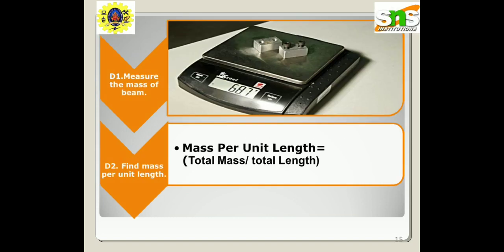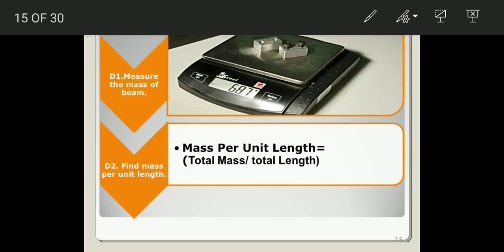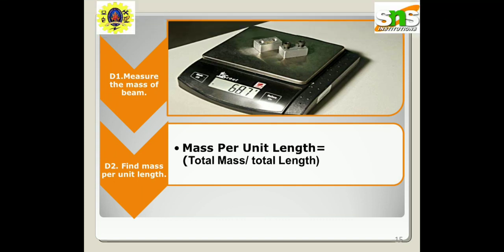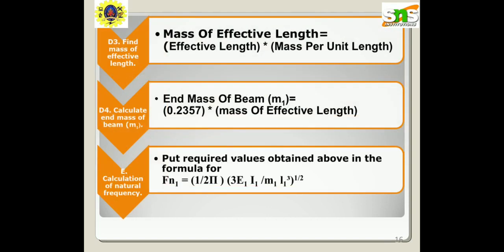D1 measures the mass of the beam and D2 is the mass per unit length. The height of the two peaks can be adjusted by changing the stiffness of the spring in the tuned mass damper. Changing the damping also changes the height of the peaks. The split between the two peaks can be changed by altering the mass of the damper. The black line shows the baseline response, the blue line shows the motion of the damping mass, and the red line shows the primary mass. The mass of effective length equals effective length multiplied by mass per unit length, and the mass of the beam is the product of 0.2357 and the effective length mass.